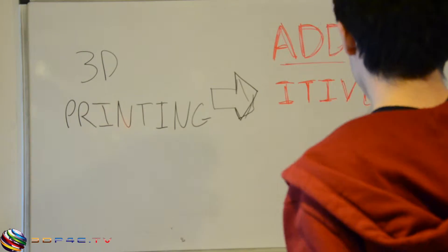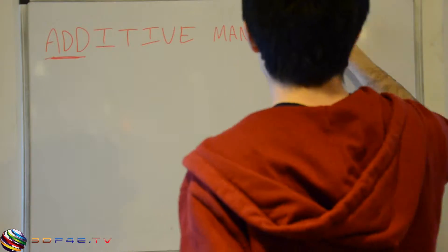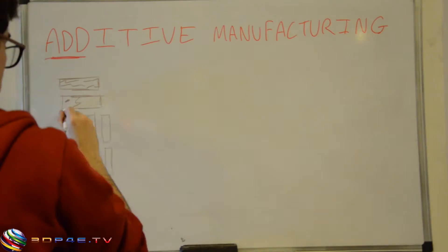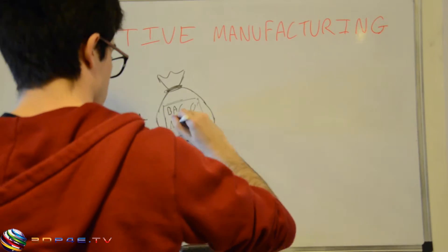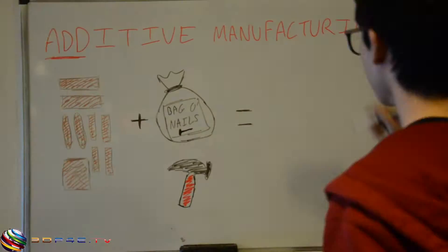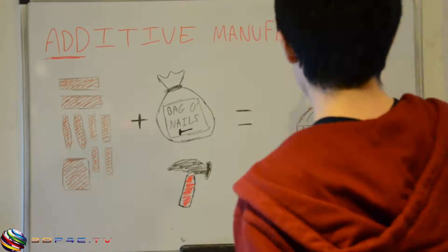3D printing is just one type of additive manufacturing, which, just as it sounds, is manufacturing characterized by the adding up of smaller parts to become a single complete object, such as the layers of plastic or powder used in 3D printing.